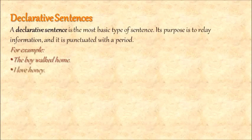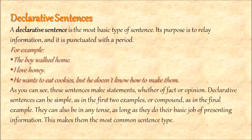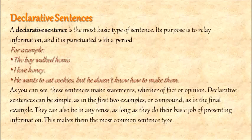Further examples: I love honey. He wants to eat cookies, but he doesn't know how to make them. If you check these sentences, you find that information is shared through them and we call them declarative sentences. These sentences make statements — whether of fact or opinion. Declarative sentences can be simple as in the first two examples, or compound as in the final example. They can also be in any tense as long as they do their basic job of presenting information. This makes them the most common sentence type.